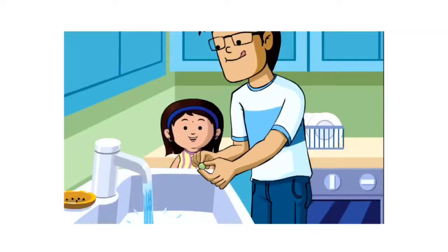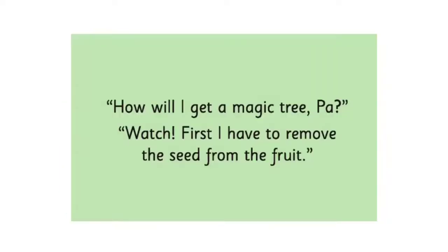Tell me, what is this image saying? What is the father doing in this image? Father is going to wash something. And what is there in his hands? Neem seed, isn't it? And where are they now? They are in the kitchen — you can see the plates over there. In this page only sentences, so we will move on to the next page.